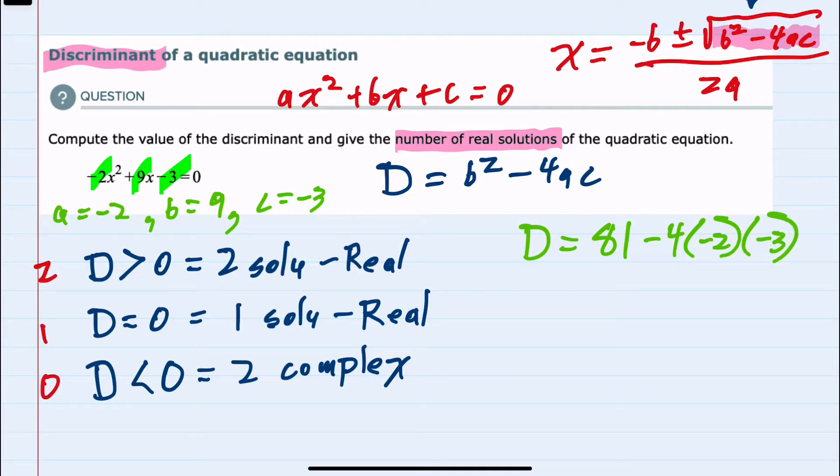Using order of operations, we would do multiplication first to simplify. So the discriminant is 81, negative 4 times negative 2 is a positive 8. Positive 8 times a negative 3 is a negative 24. And then doing the subtraction, we now have D equals 57.